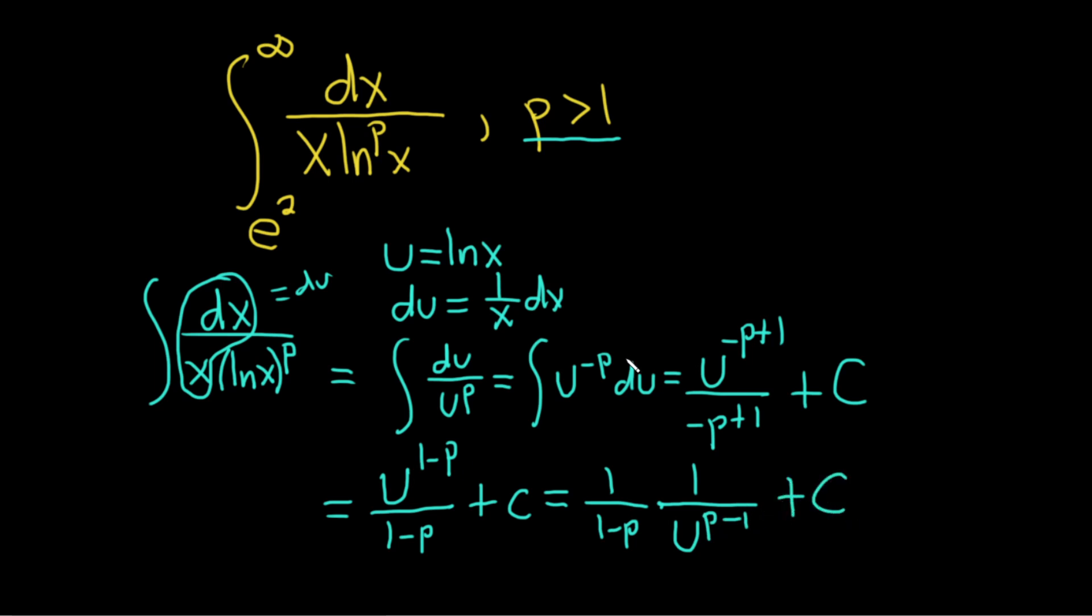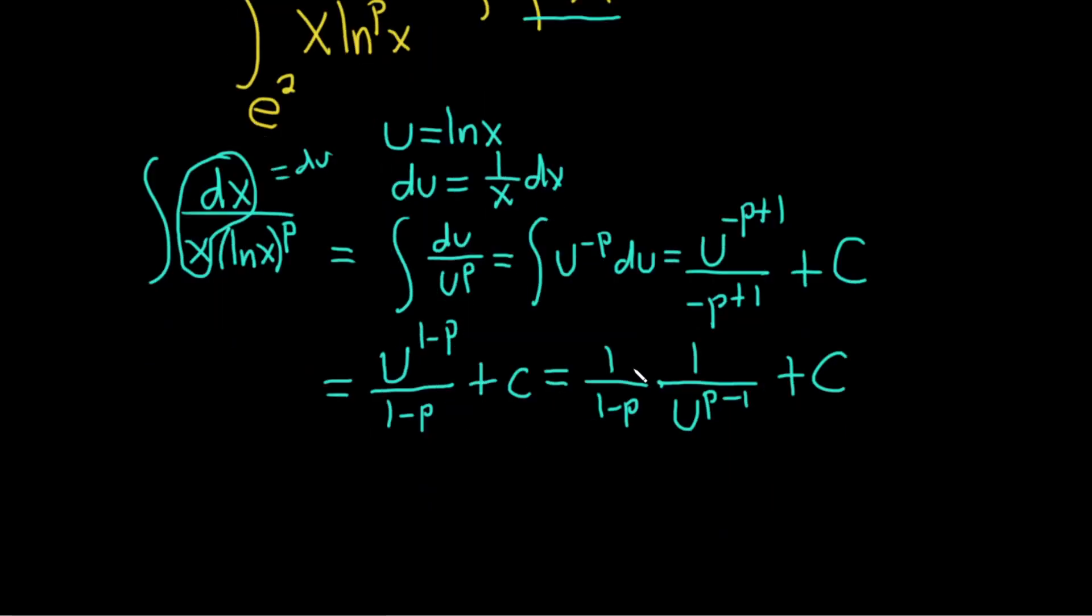And almost there. One more step here. This is equal to 1 over 1 minus p times... And then 1 over... And then u is the natural log of x. This is ln x, p minus 1 plus c.